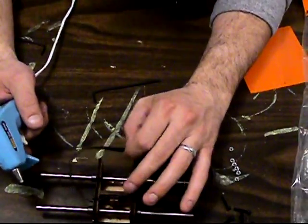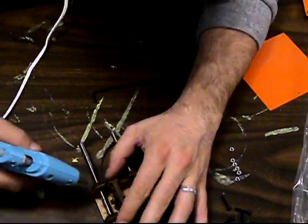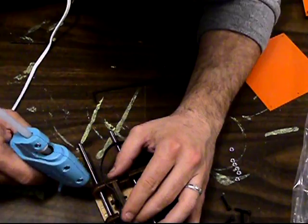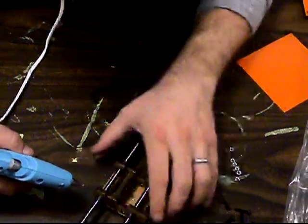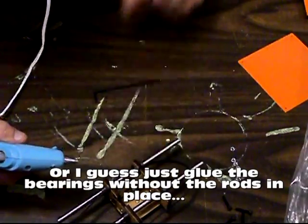And then we're going to take our glue gun and put just a little dab of hot glue here on these bearings, just to hold them in place. And be really careful not to get any on the rods, and if you do, pull it off.